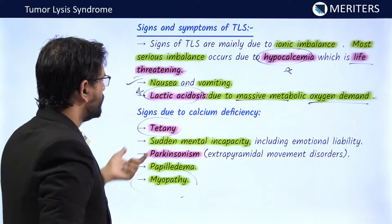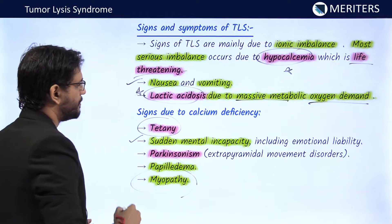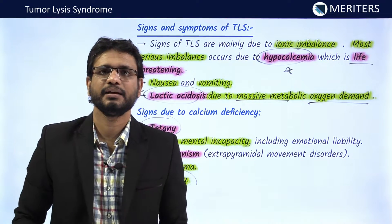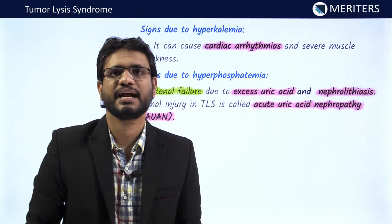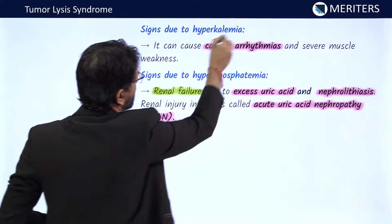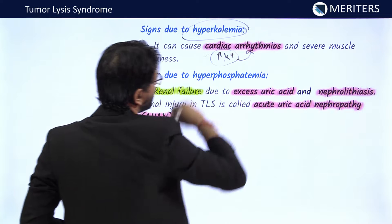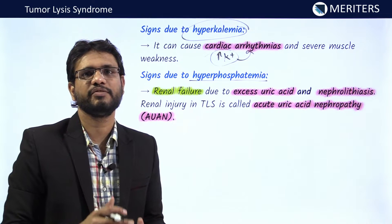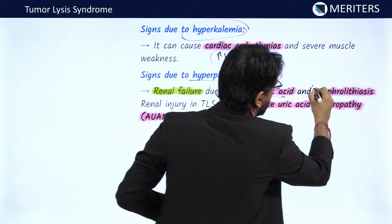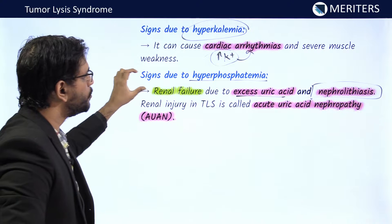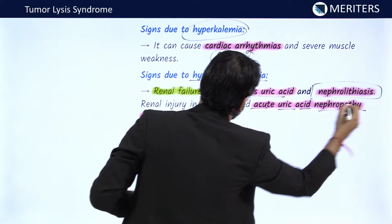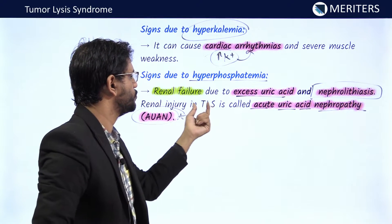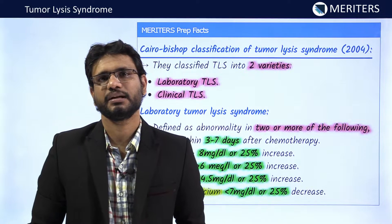Signs due to calcium deficiency include tetany and myopathy. There can also be sudden mental incapacity, parkinsonism, extrapyramidal movement disorders, and papilledema due to decreased circulating calcium. Increased phosphates and uric acid cause further dysfunction. Hyperkalemia leads to cardiac arrhythmias and severe muscle weakness. Hyperphosphatemia primarily affects the kidney, causing renal failure, nephrolithiasis, and excess uric acid. Renal injury caused by TLS is specifically known as acute uric acid nephropathy (AUAN).